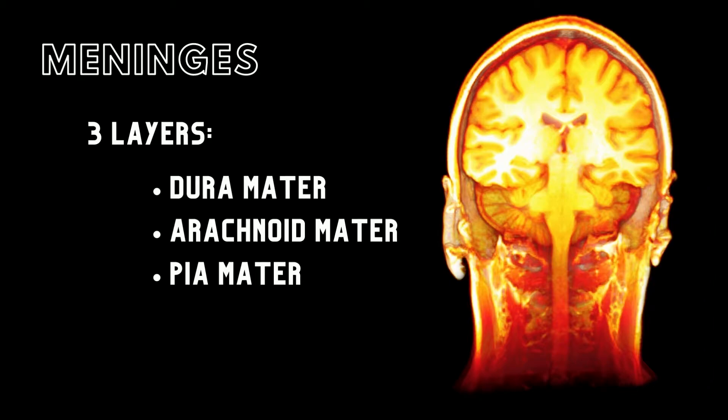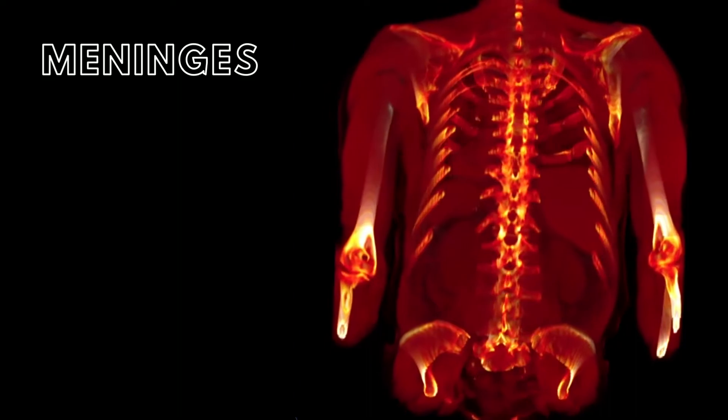The meninges can also be divided into cranial and spinal meninges, which are continuous with each other at the foramen magnum. Let's learn about each of the layers of the meninges.